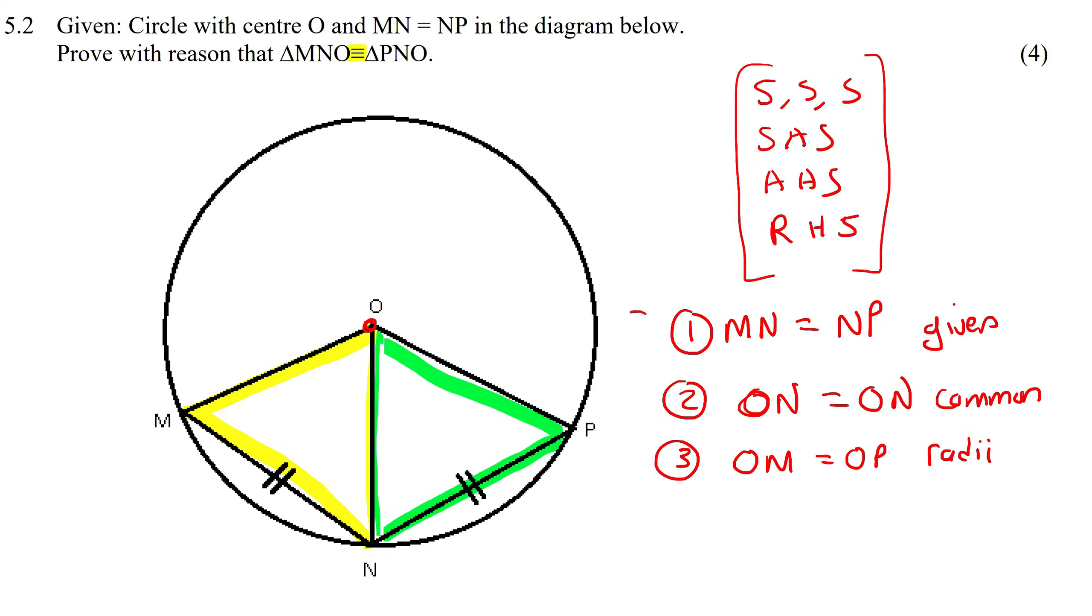And there we found three things. What was this? This was a side. What is this? This is a side. What is this? This is a side. We didn't use any angles in this question. And so therefore, we could say that triangle MNO is congruent to triangle PNO, because of side, side, side.